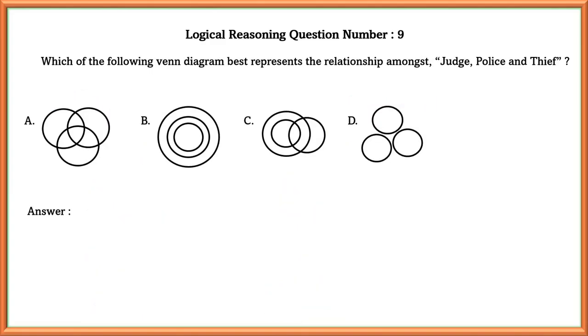Logical reasoning question number 9. Which of the following Venn diagrams best represents the relationship amongst judge, police and thief? There is no relation between judge, police and thief. So the best Venn diagram that will represent this is the D option.